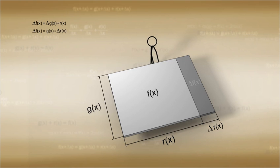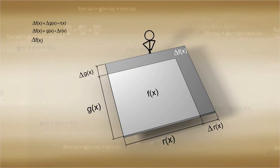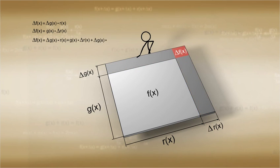And if both of the functions change, then the formula is Δf(x) is equal to Δg(x) times r(x) plus g(x) times Δr(x) plus Δg(x) times Δr(x).